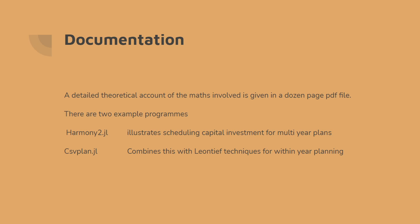There are two example programs. Harmony2.jl illustrates scheduling capital investment for multi-year plans with scalar capital, with one capital good. Which is obviously unrealistic for a real economy, but it's just to isolate the issue of scheduling time investment for five-year plans. Then there is csvplan.jl, csv because it reads in spreadsheets in csv format, and it combines the capital investment schedule technique with Leontief's techniques for planning.